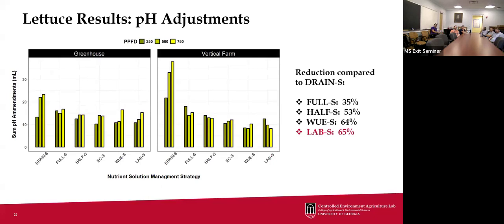We also tracked pH management through the experiment. The drain-and-refill treatment consistently required more pH adjustment — especially in the vertical farm, where the sum of pH amendments added was noticeably higher. I think this relates to the buffering capacity of the solution: as plants absorb CO2 forming carbonic acid that acidifies the solution, draining and refilling with fresh solution means the equilibrium has to re-establish each time. This was an unexpected challenge with drain and refill, and a similar effect appeared to some extent in the greenhouse trials as well.